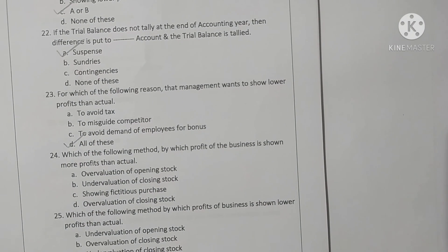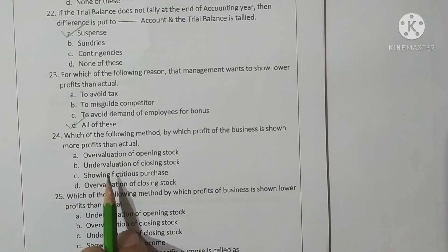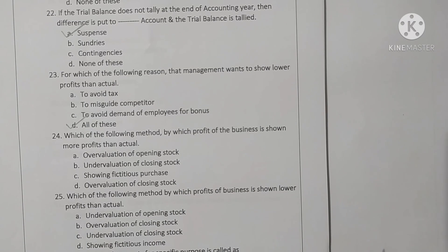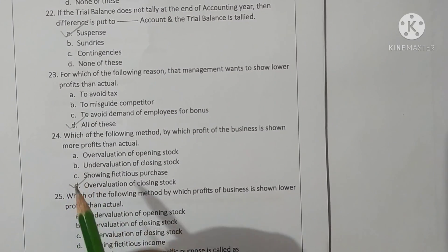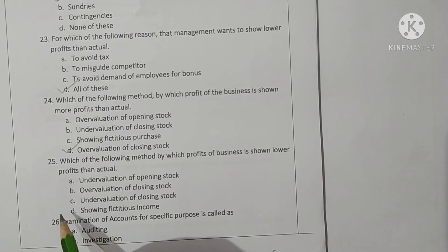Question 24: Which method is used to show more profit than actual? The correct answer involves overvaluation of closing stock — option C is correct.